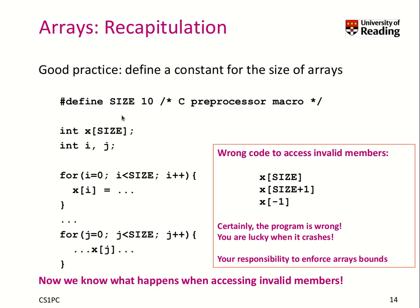We learned that it's a good practice to define a constant for the size of an array as long as you know how big this array needs to be in your code. Here we define SIZE to be 10 as a C preprocessor macro, and then we declare an array x as size of many integers.